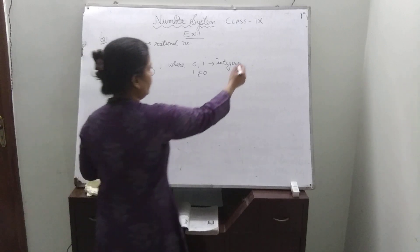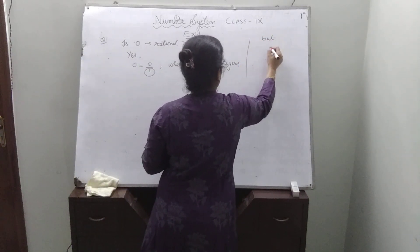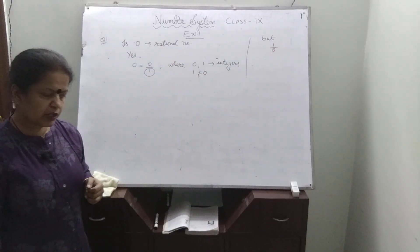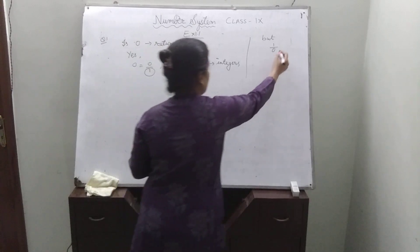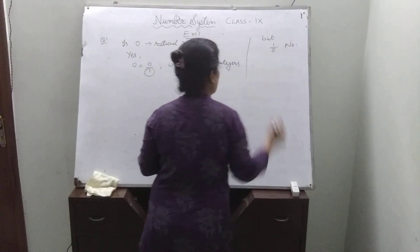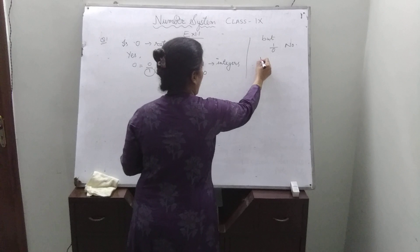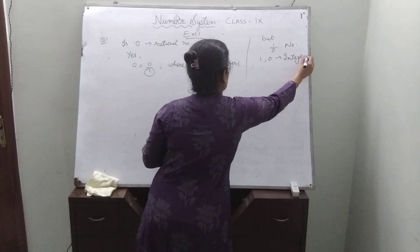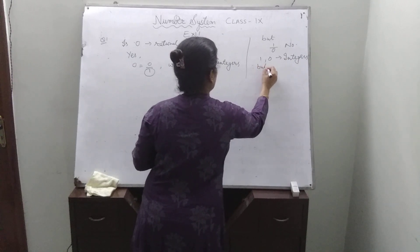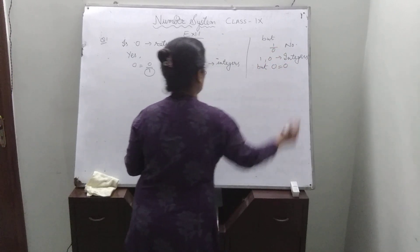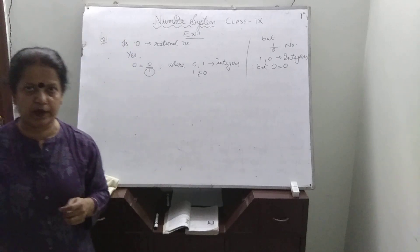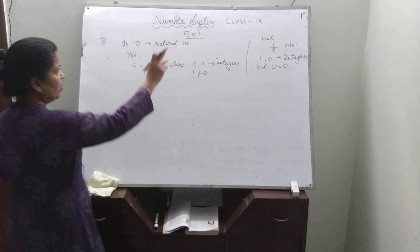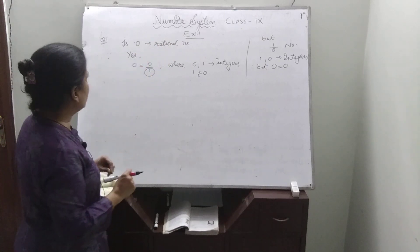But if we take 1 upon 0, is that also a rational number? No, this is not a rational number. Why? Because 1 and 0 are integers, but the denominator 0 equals 0, which does not satisfy the condition of a rational number. Therefore, 1 upon 0 is not a rational number.